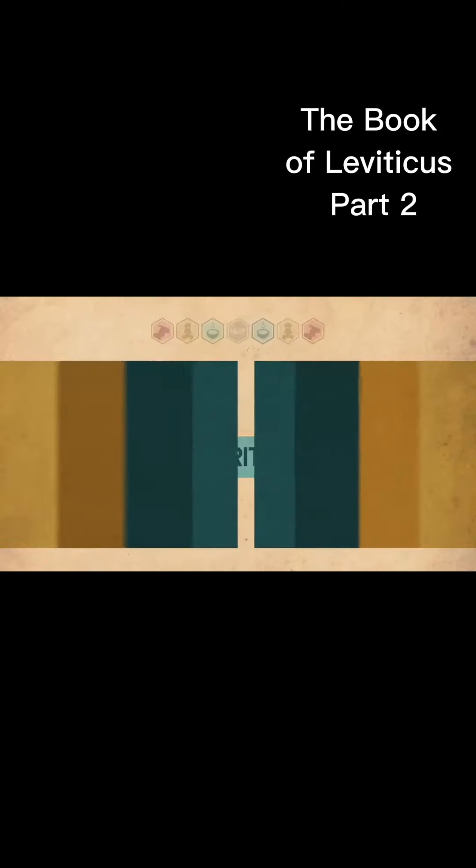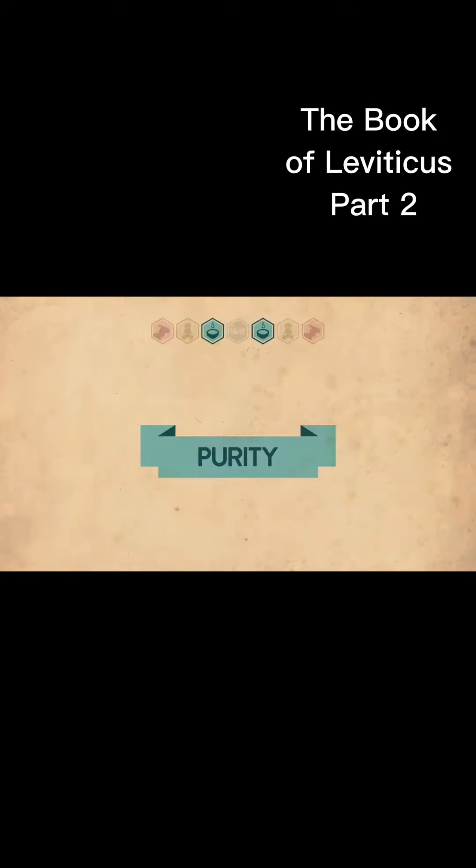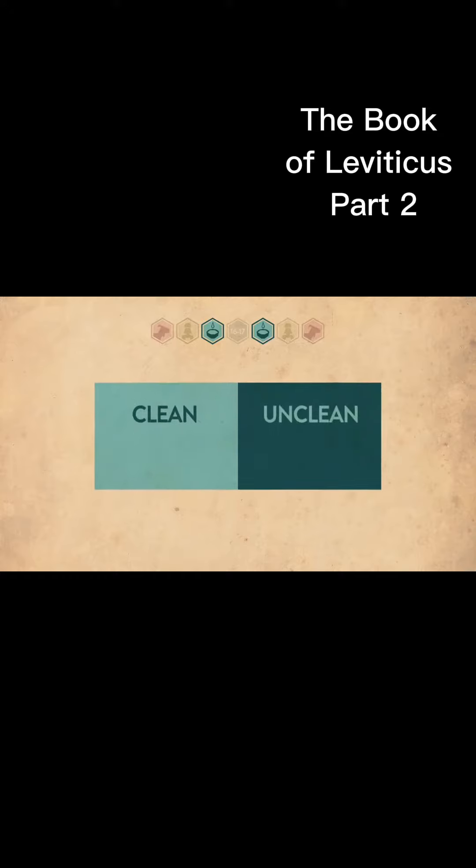The third solution in the book is all about purity laws, and this is by far the hardest thing to understand. For example, in this section, we're really concerned with knowing whether you're clean or unclean, or another way of saying that is being pure and impure. Here's what we need to know to understand this.